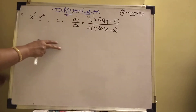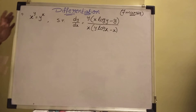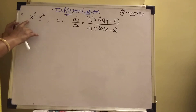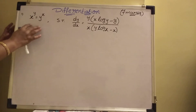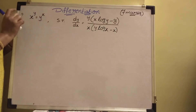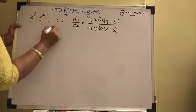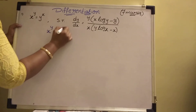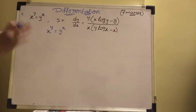This is a 7-marks problem. 7-marks models is a very important model. Here, given x power y equal to y power x. Here the power also has a variable. That time you should take both sides log.